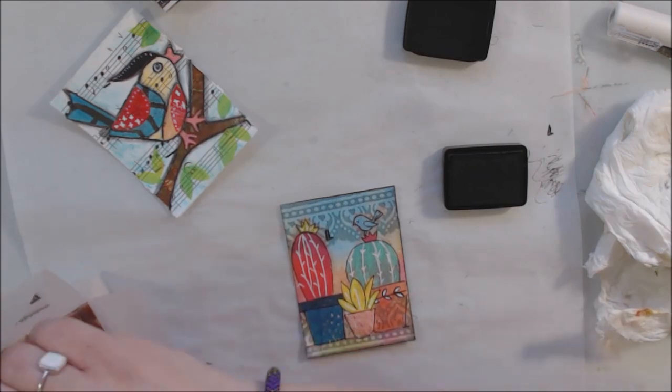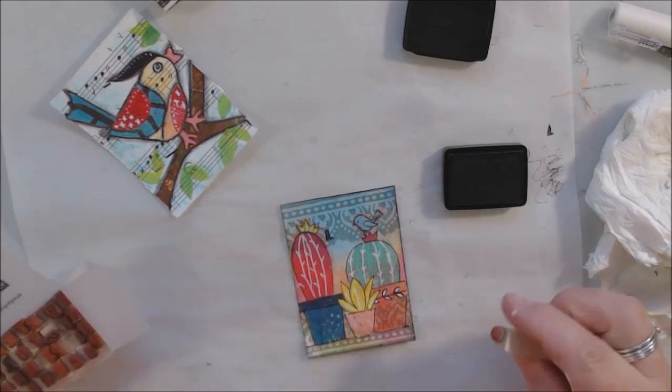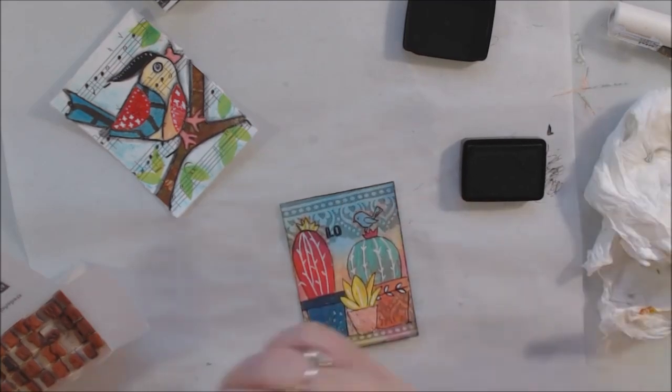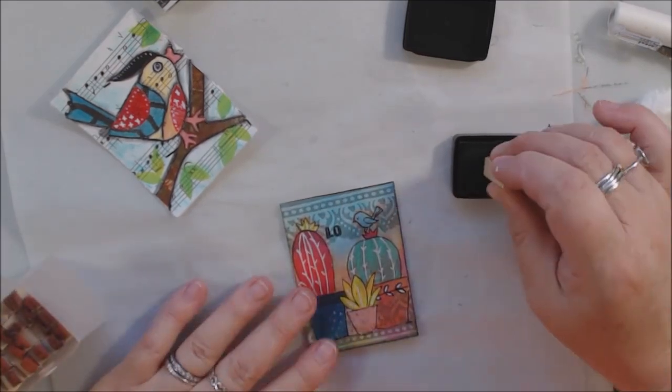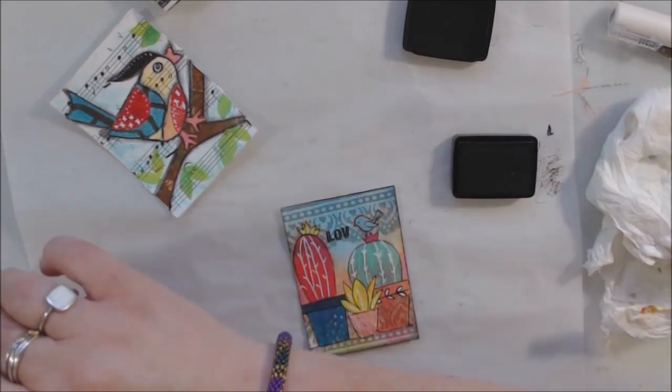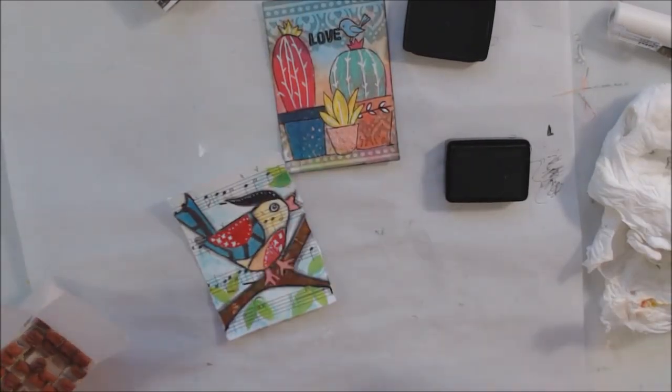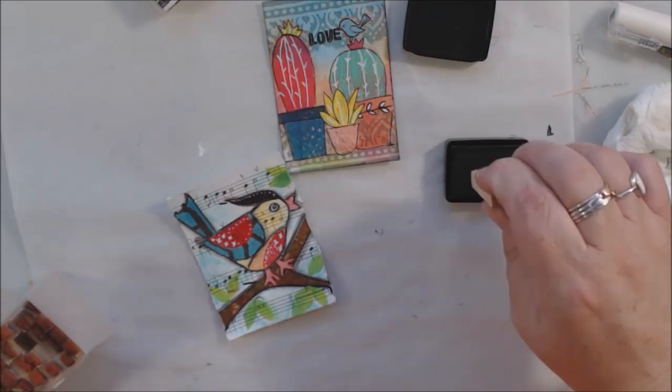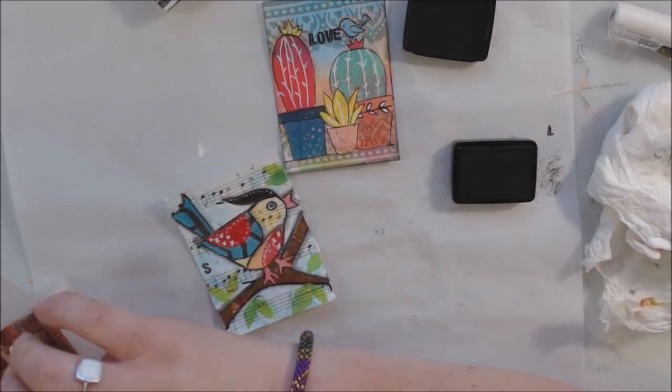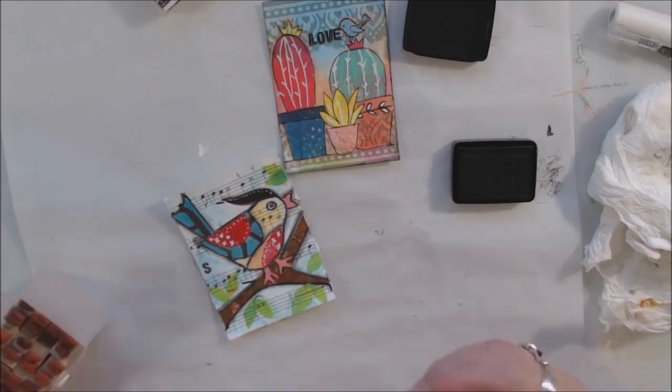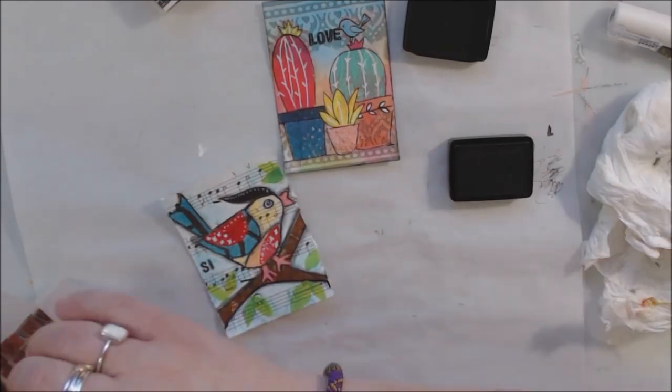The last thing I did was get out this little tiny letters stamp set from Stampin' Up. I stamped the word 'love' on here because I love the desert, I love where I live. I stamped the word 'sing' on the other one.